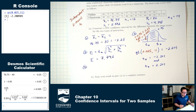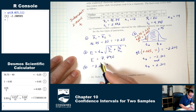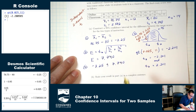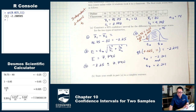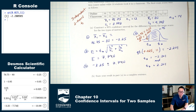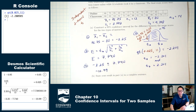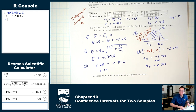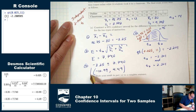Step four: construct your interval. Start with negative 3.25 plus or minus 7.740. The low number is negative 3.25 minus 7.740, which equals negative 10.99. The high number is negative 3.25 plus 7.740, which equals 4.49. That's our confidence interval: (negative 10.99, 4.49).